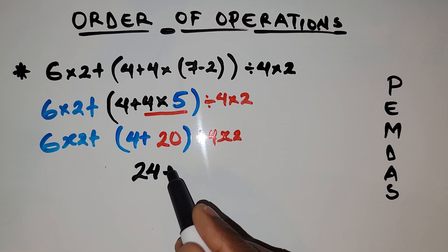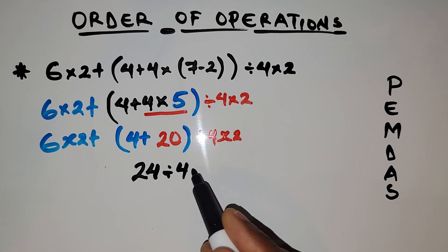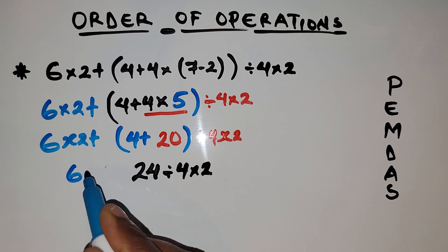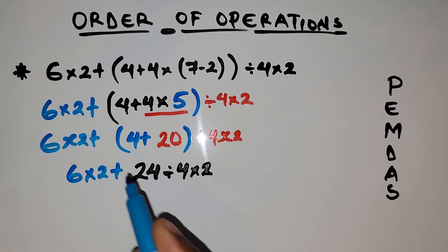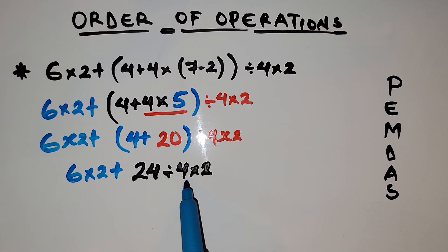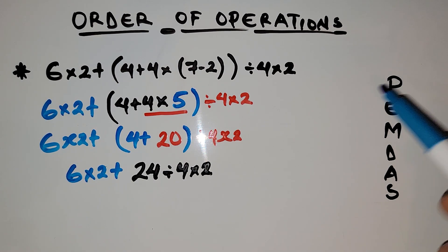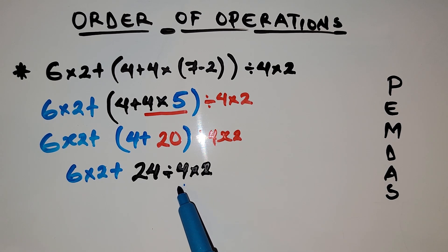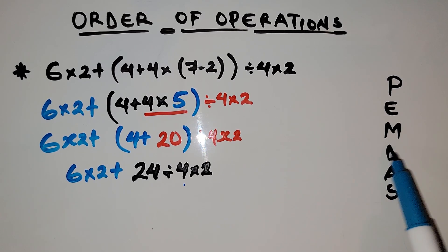We now have 24 divided by 4 times 2, and our remaining problem is 6 times 2 plus 24 divided by 4 times 2. We have completed the parentheses. We have no exponent here, so we skip exponent. Then we have modification. By the way, modification and division work in line — they have the same priority.